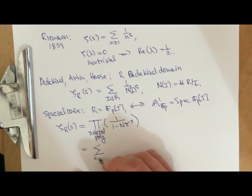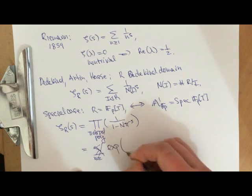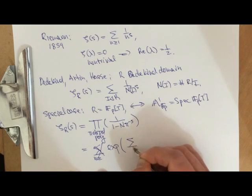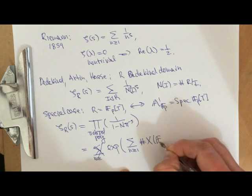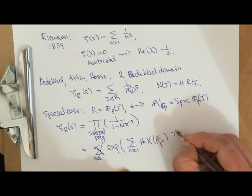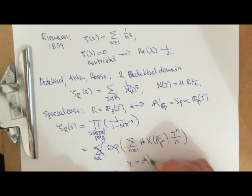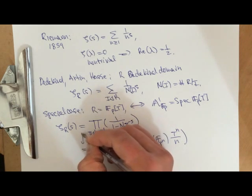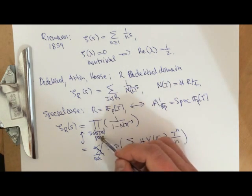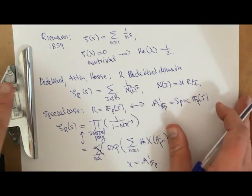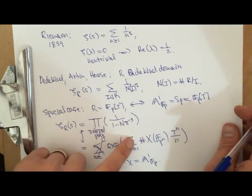Maybe I'll work this out in another video. There's a non-trivial fact that this generating function is related to the generating function for point counts — so for F_p to the n — as T to the n over n. The connection between the zeta function here and the point-count generating function involves irreducible polynomials; it's non-trivial, but there are plenty of good resources. This gives you the connection to geometry.